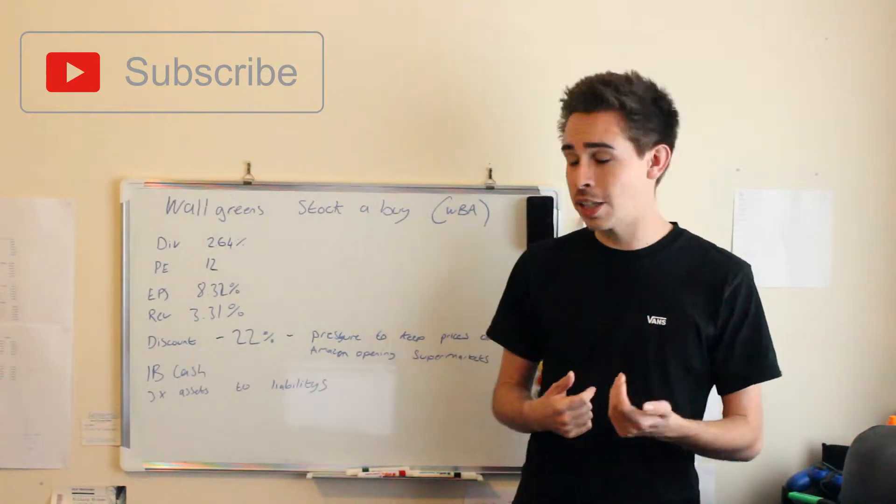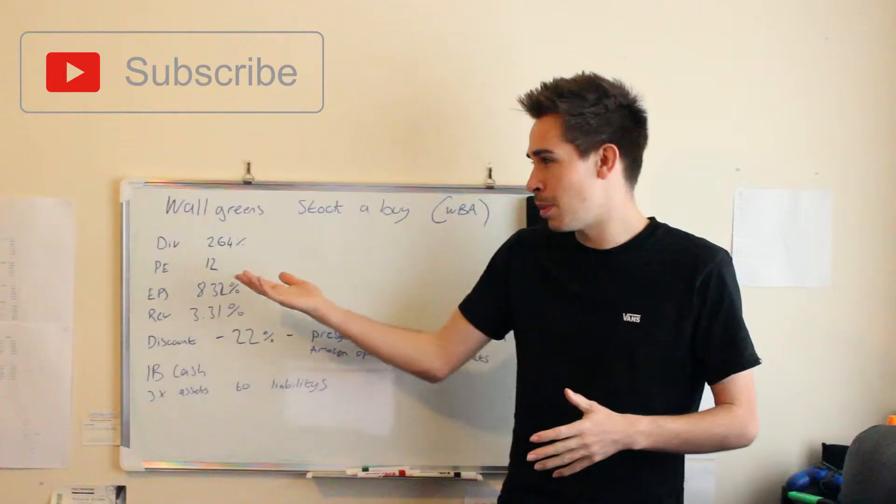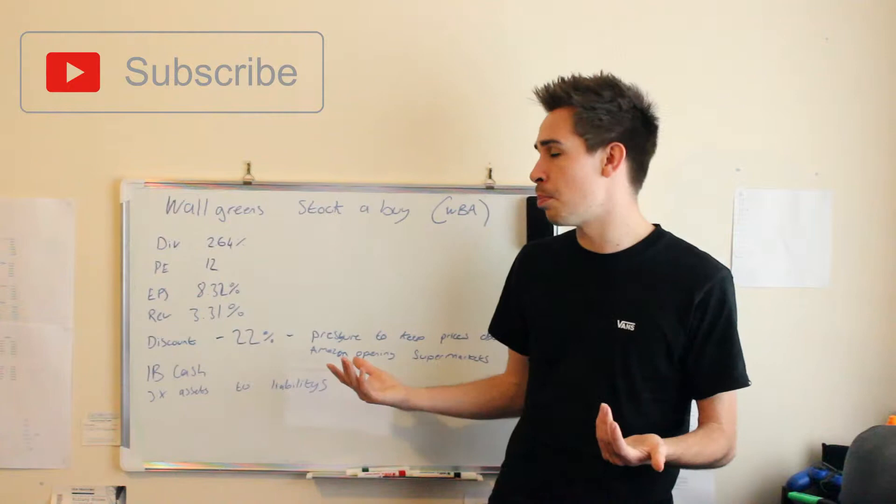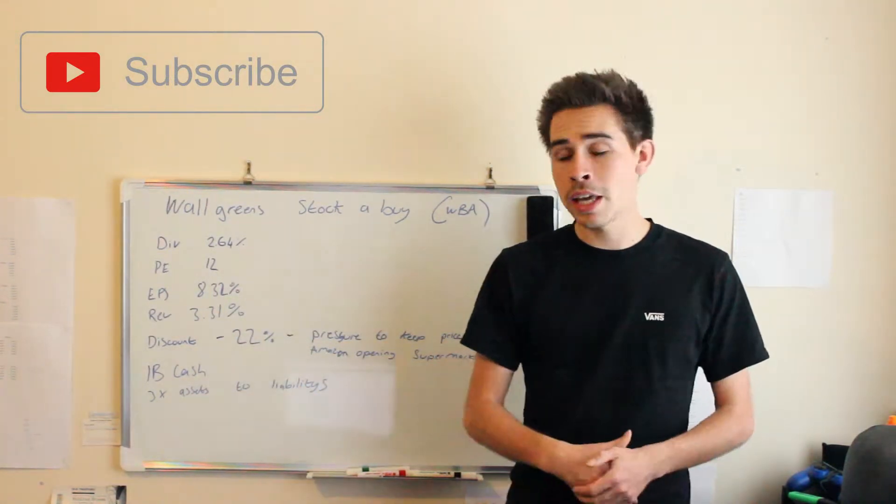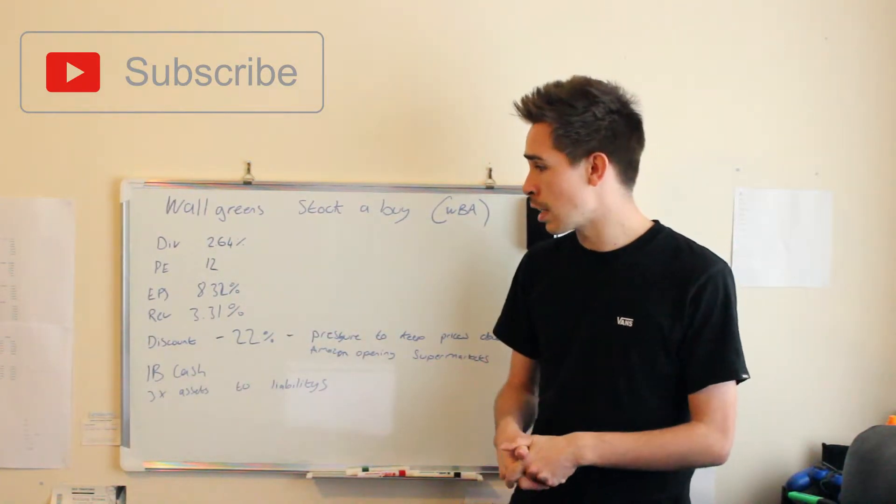First of all, we're looking at Walgreens. It's actually got a dividend yield of 2.64%, so just below that 3% mark. It seems like for it to be classed as a proper dividend stock, it needs to be near that 3% mark, which is pretty close, so that's a good dividend. The PE is 12, so a nice PE. That's sort of the PE range that I really like to get into, so that's pretty good.